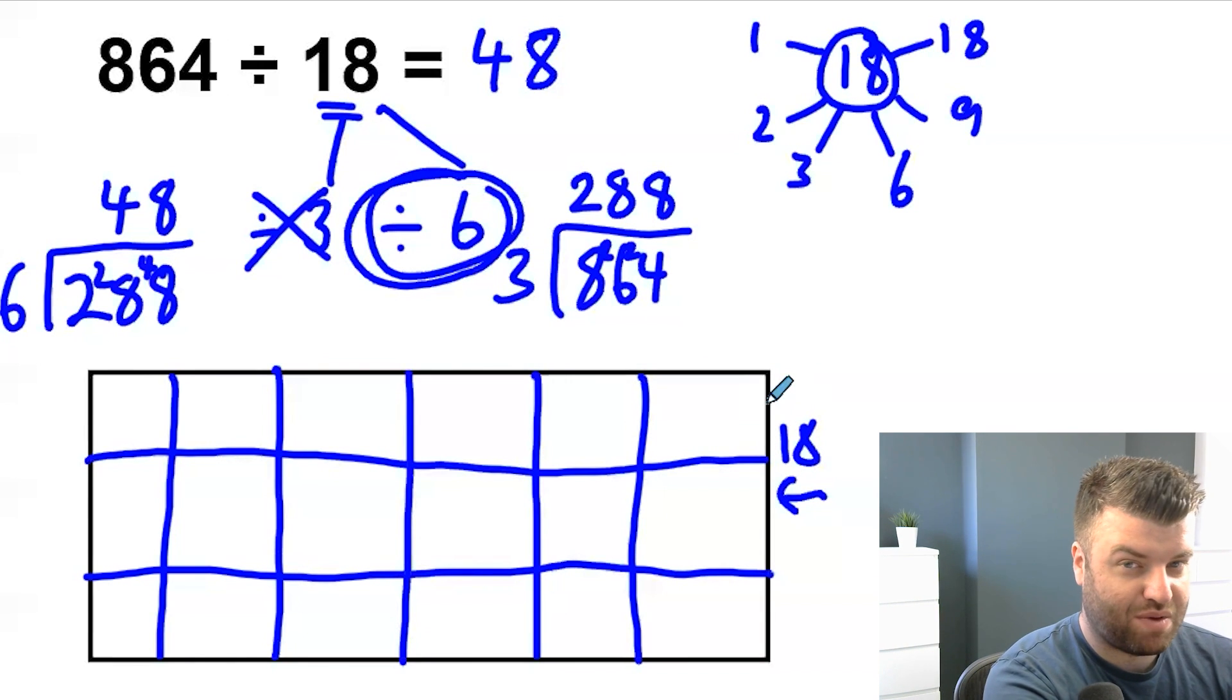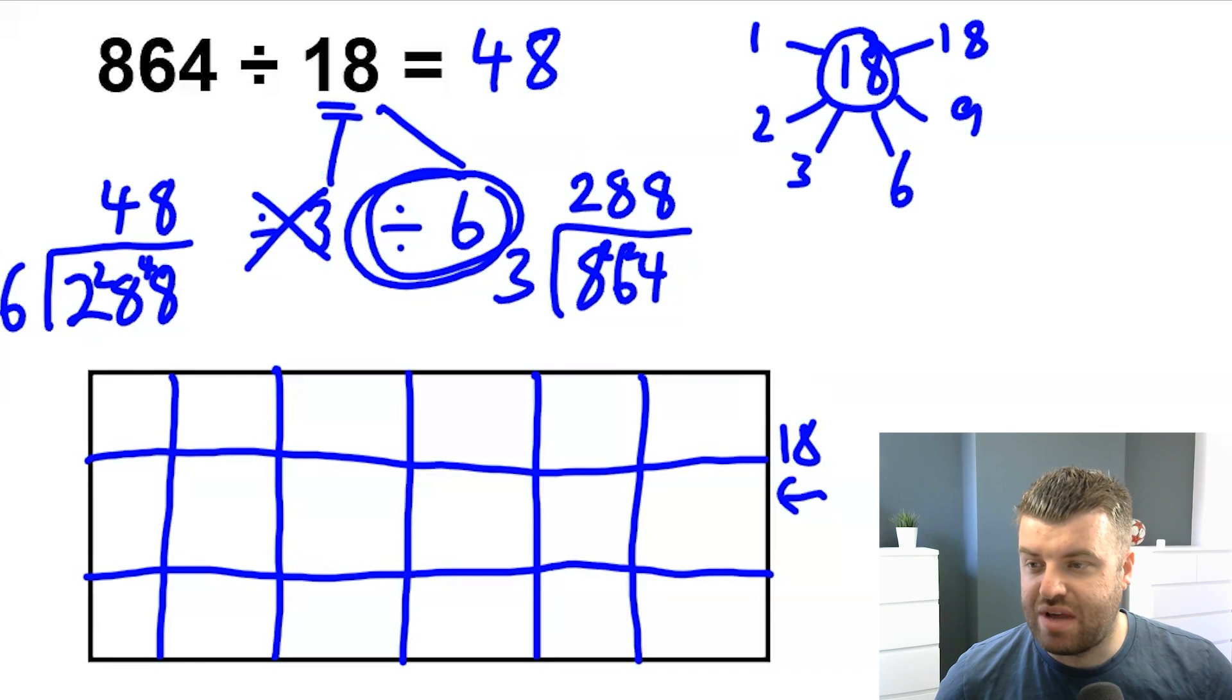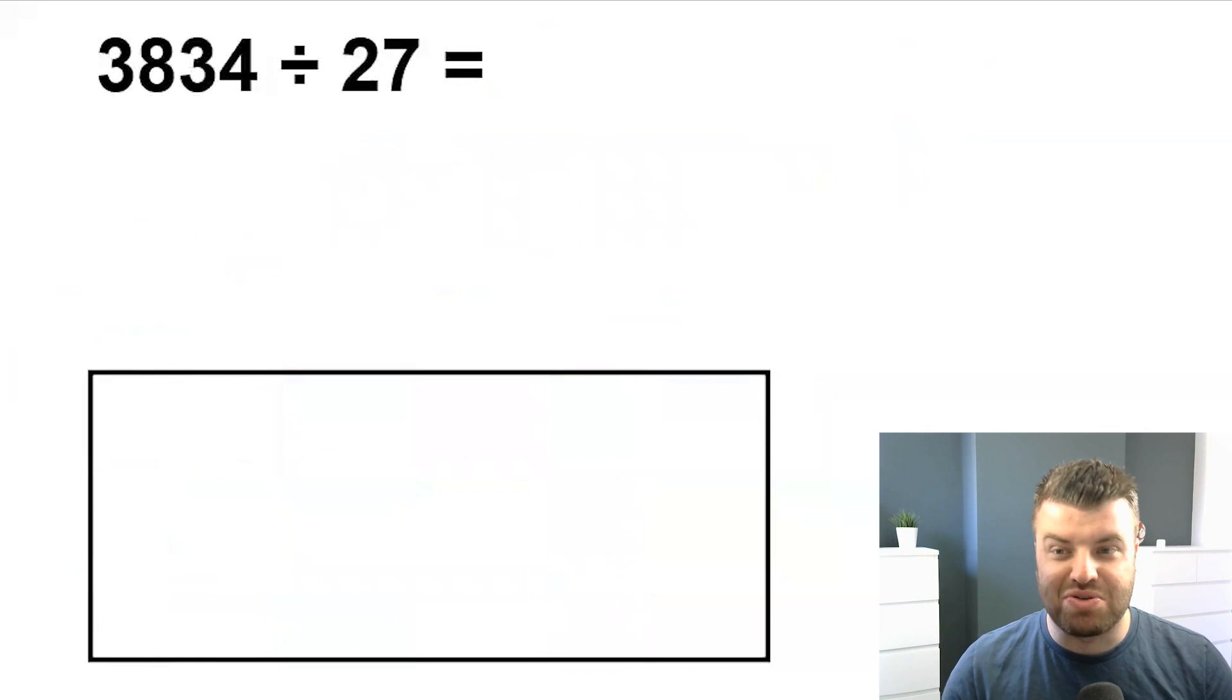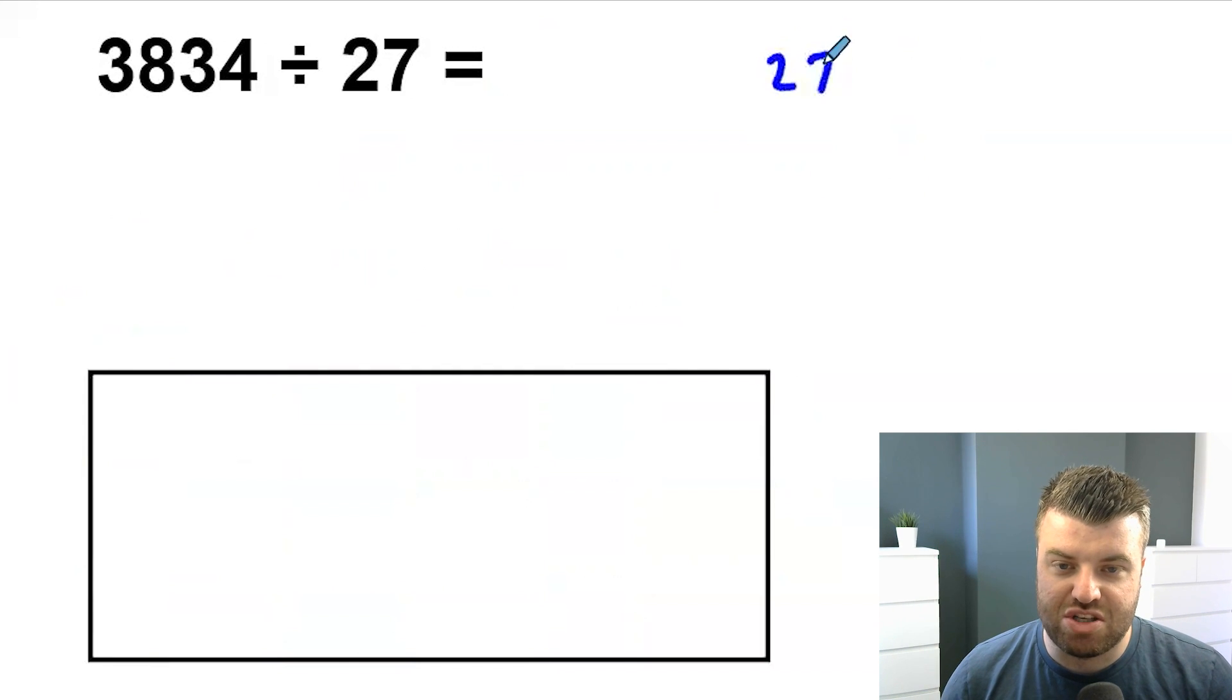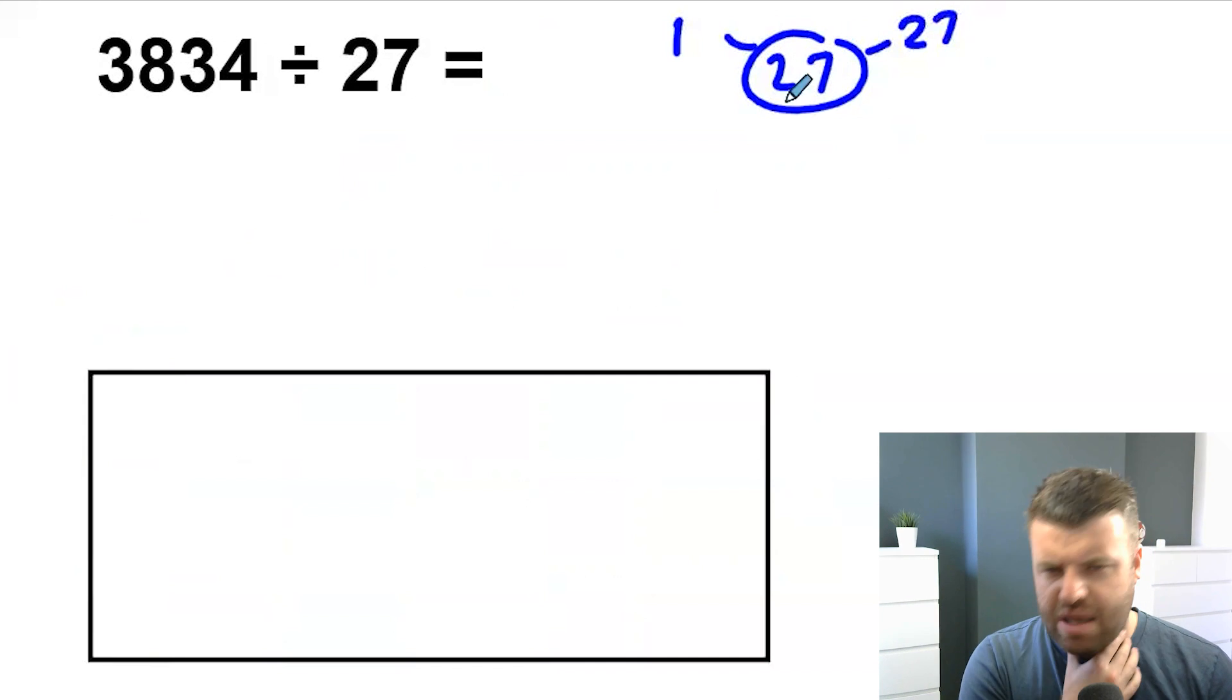Let's try another question and see if it works. So the next one we've got here is 3,834 divided by 27. Well, same thing you've got to do. You'll be thinking, what are the factors of 27? Well, we have 1 and 27 always. Is it a prime number? Are those the only factors we have? Remember, a prime number has two factors.